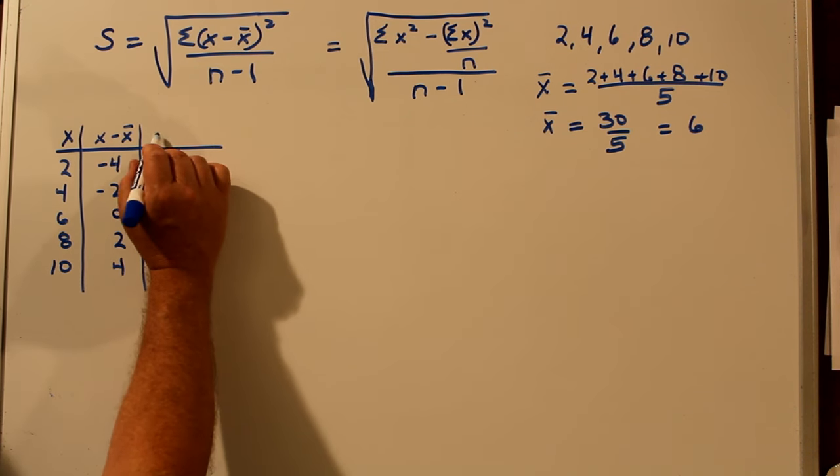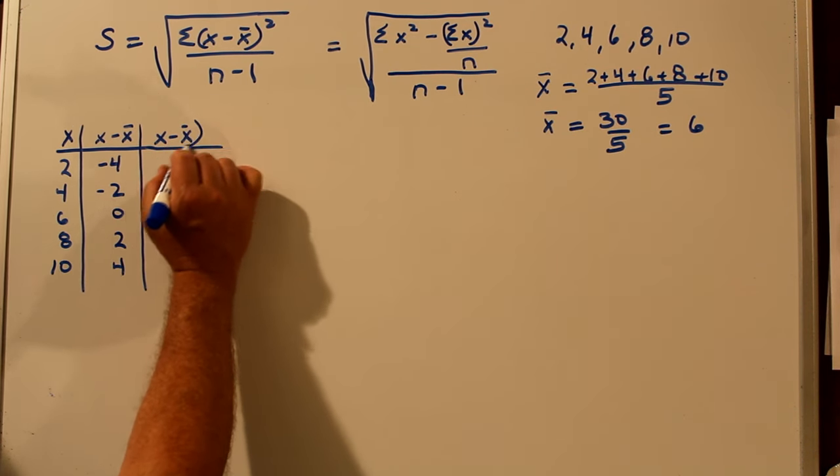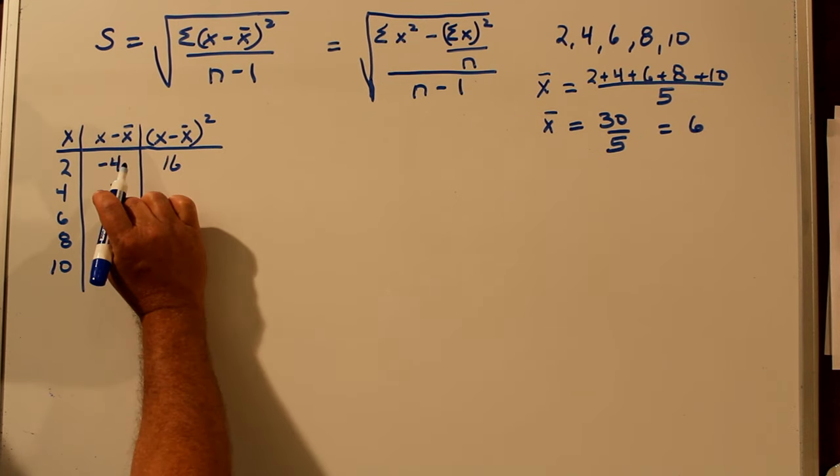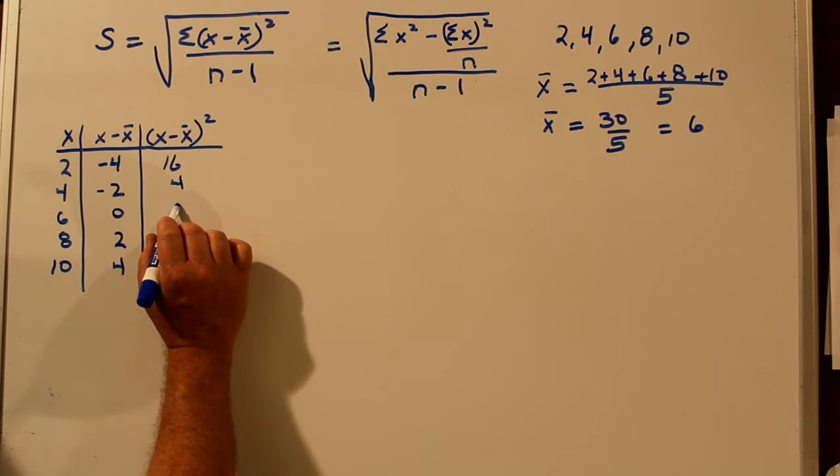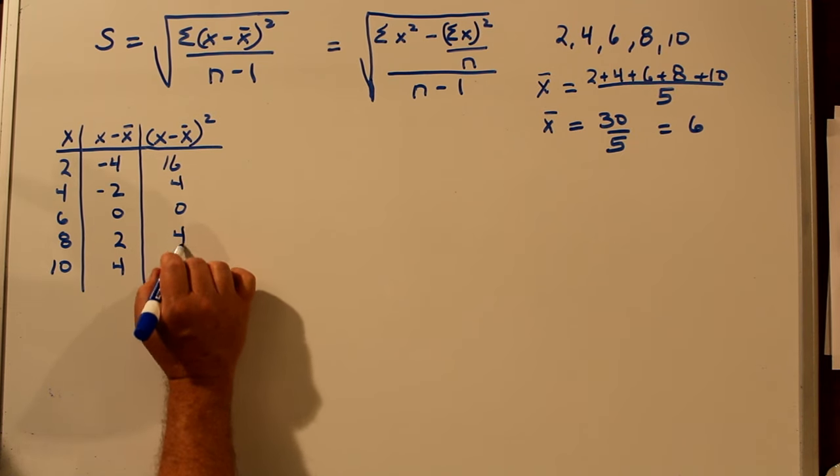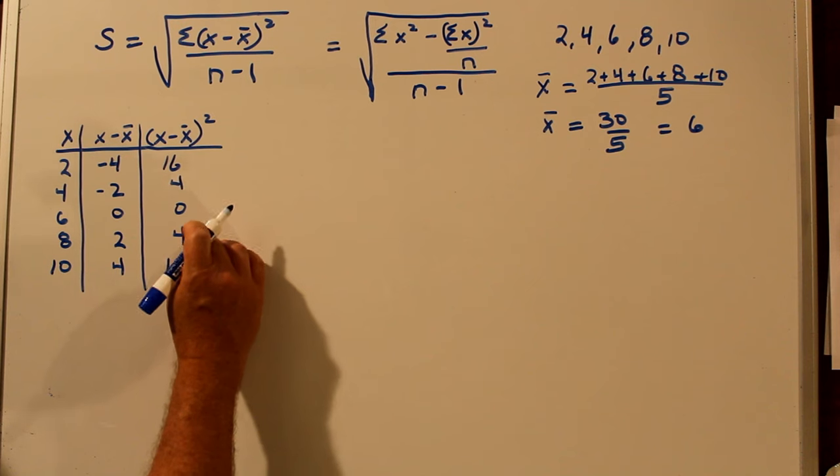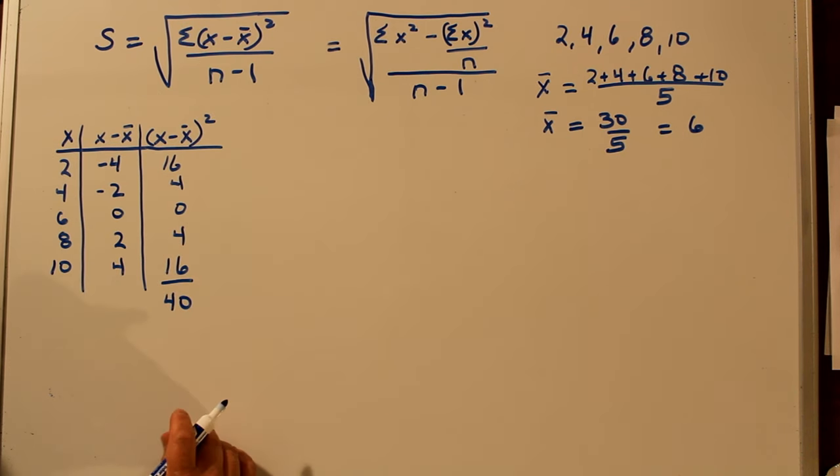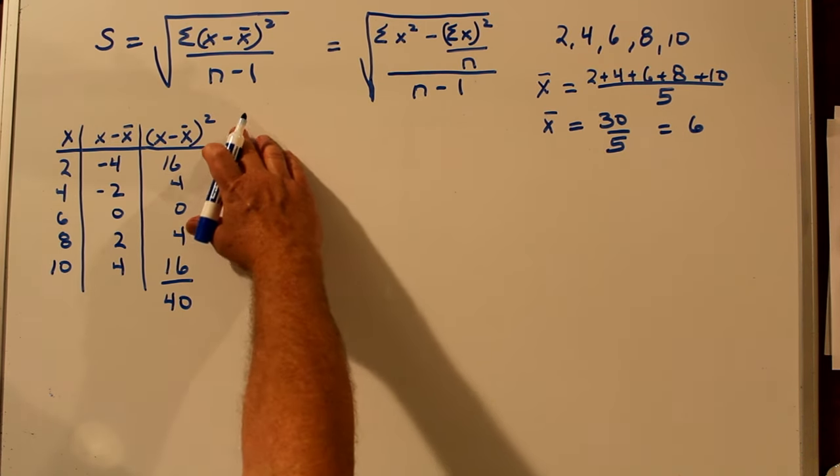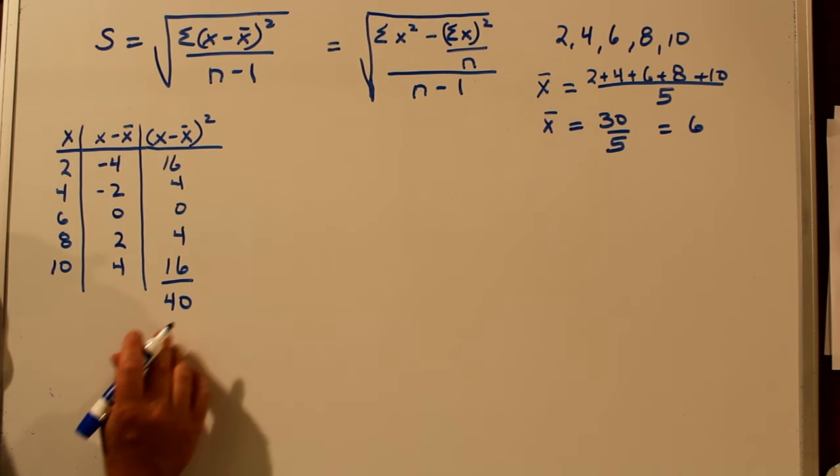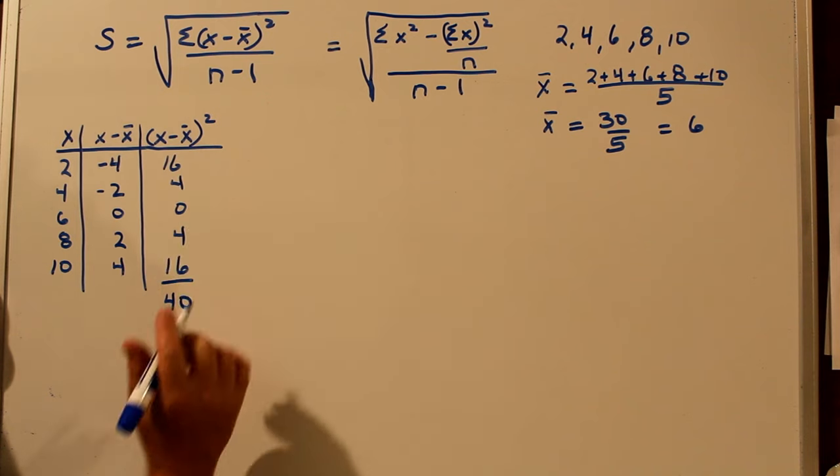Now we're going to square all these differences. X minus X bar quantity squared. So minus four squared is 16. Minus two squared is four. Zero squared is zero. Two squared is four. And four squared is 16. And we add these up. 16 and four is 20. And 20 is 40. So the summation of X minus X bar squared is 40. So we can now find the standard deviation because we need the summation of the differences squared.